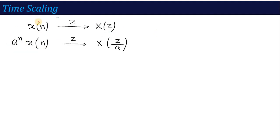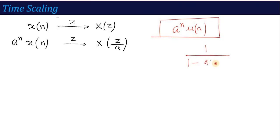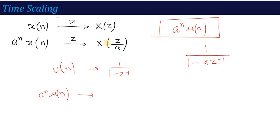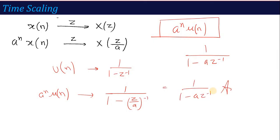For an example of time scaling: suppose we want to calculate the Z-transform of a^n * u(n). We already know its Z-transform is 1/(1 - a*z^(-1)). But if I use the time scaling property: the basic is u(n) with transform 1/(1 - z^(-1)), and applying time scaling — z is replaced by z/a — gives 1/(1 - a*z^(-1)), which is the same result whether you use the basic method or the property.